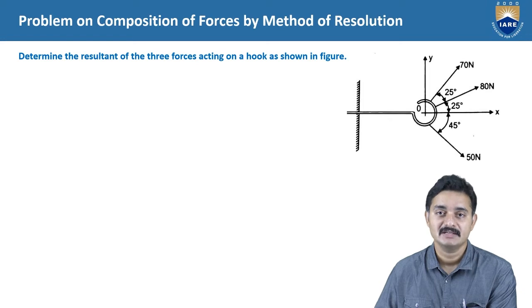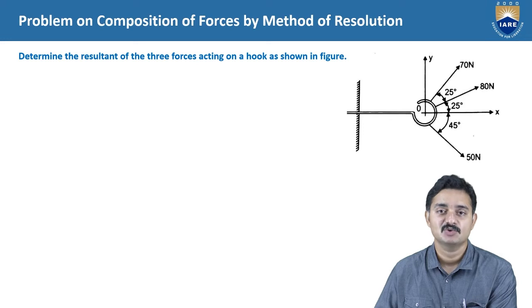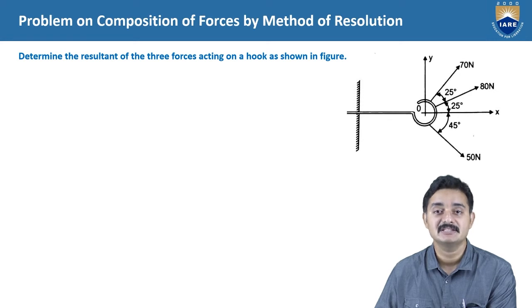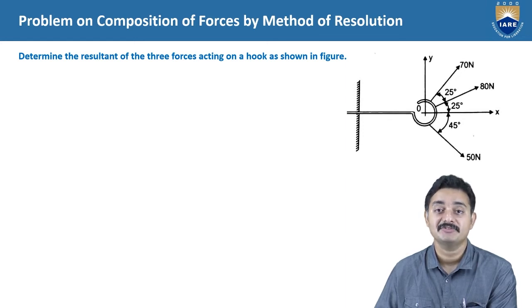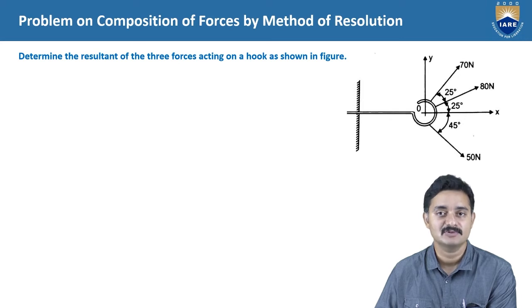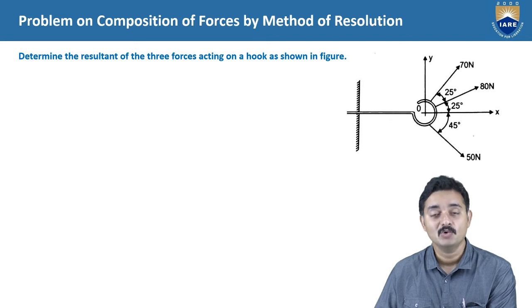In the figure you can observe that the 80 N force is acting at an inclination of 25 degrees to the horizontal, and the 70 N force is acting at an inclination of 50 degrees — that is, 25 degrees plus 25 degrees — to the horizontal. As these forces are inclined forces, we need to resolve them into mutually perpendicular component forces, because we will be considering only the forces which are horizontal and vertical.